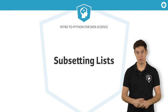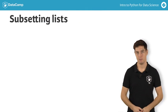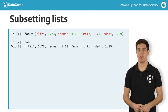After you've created your very own Python list, you might wonder how you can access information in this list. Python uses the index to do this. Have a look at the fam list again here.